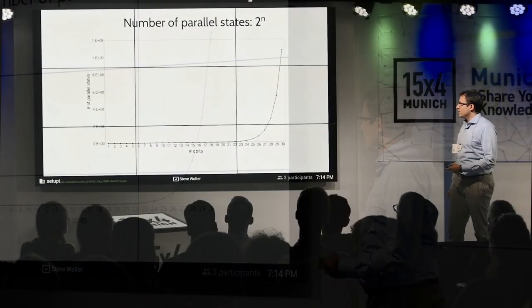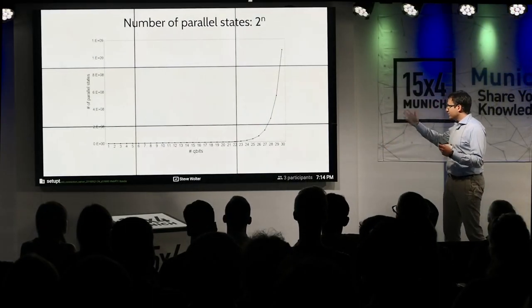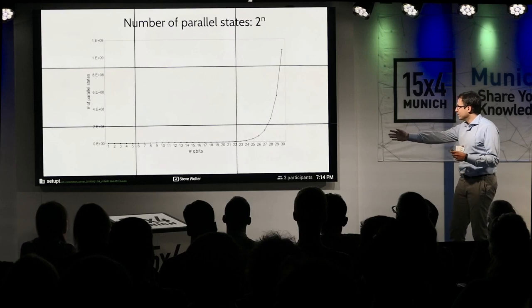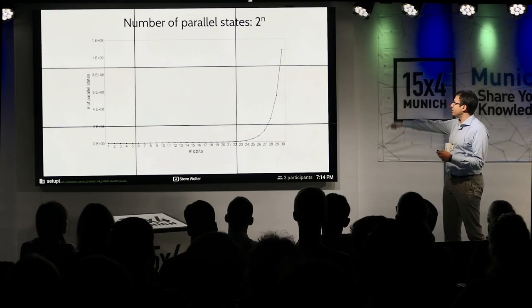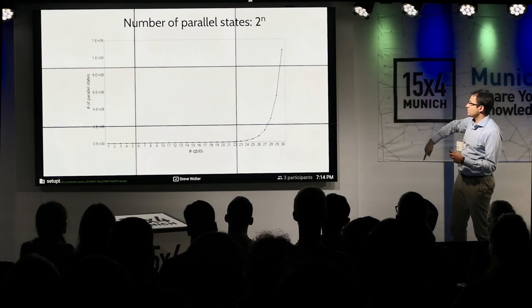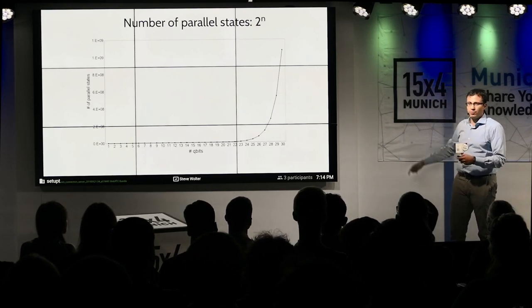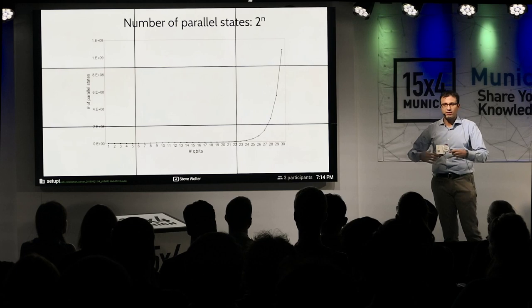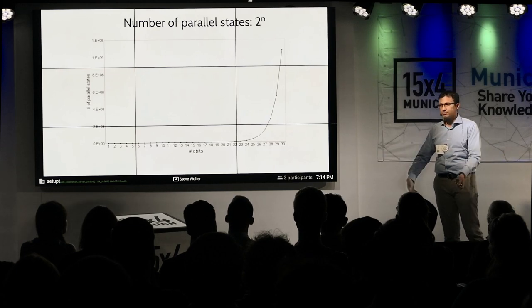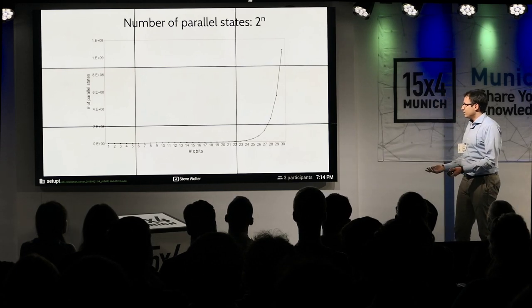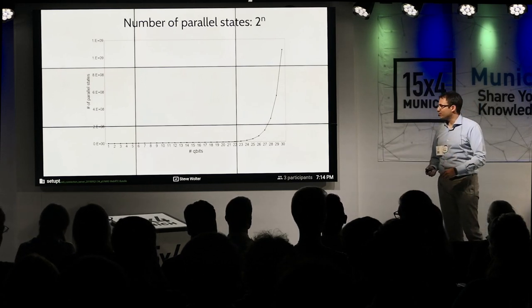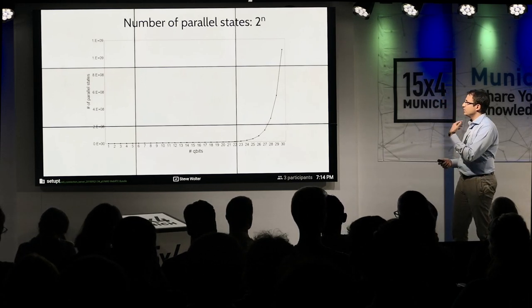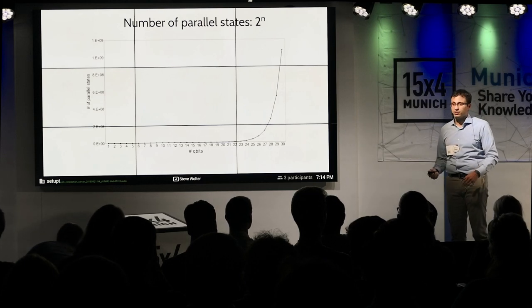What does this mean in numbers? It's quite remarkable — if I have 30 qubits, I can already represent more than one million states in parallel at the same time. And that's cool. But it's not enough. We need to use other properties as well.